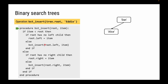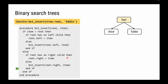Let's say we want to add Eddie. We start at the root and look at Eddie. If the item is less than the root — E is not less than D — so we go to the else branch. If the root has no right child, it doesn't, so we just insert Eddie as the right child of Dan.